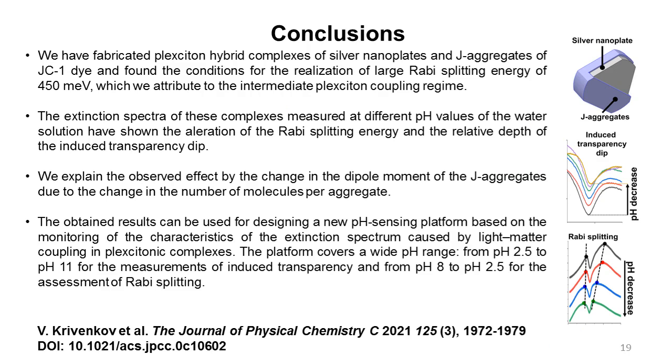In conclusion, we have fabricated plasmon exciton hybrid complexes of silver nanoplates and J-aggregates of JC1 dye, and found the conditions for the realization of large Rabi splitting energy of 450 meV, which were attributed to the intermediate plasmon exciton coupling regime.